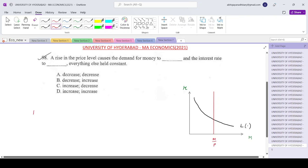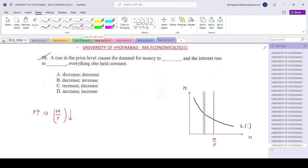So if P increases, M by P falls, correct? So what will happen? This curve will shift to the left.